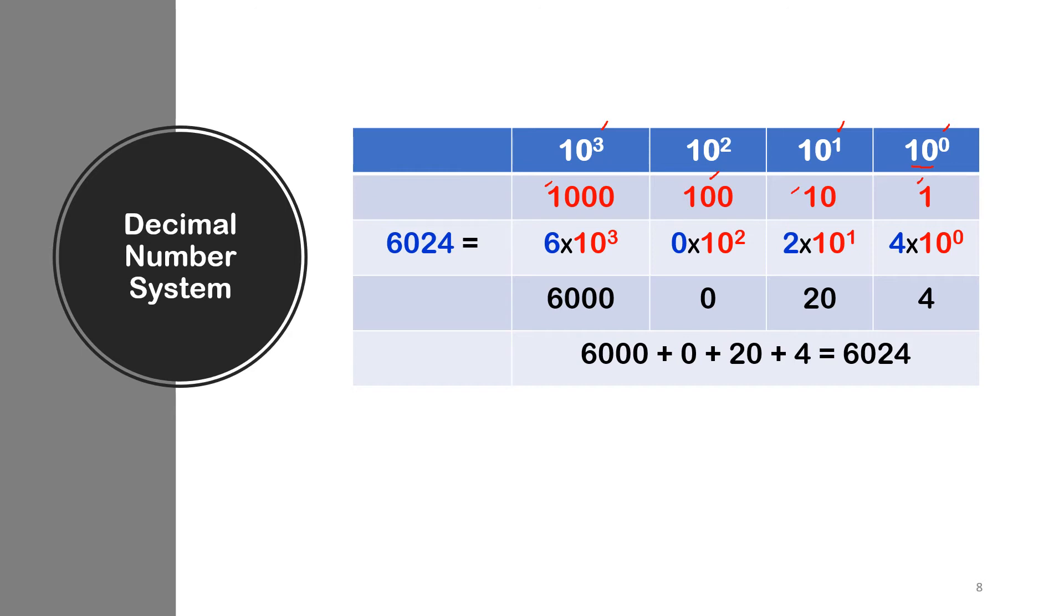Now let's take a look at this example. We have 6, 0, 2, 4. What that means is you split them up and then you multiply 4 by 10 to the 0 which is a 4 because 10 to the 0 is a 1. Now 2 multiplied by 10 to the 1 is 20. 0 multiplied by 10 to the 2 is 0. And 6 multiplied by 10 to the 3 that's 6000. If you add these numbers up, 6000 at 0 at 20 at 4, that will give us 6, 0, 2, 4.